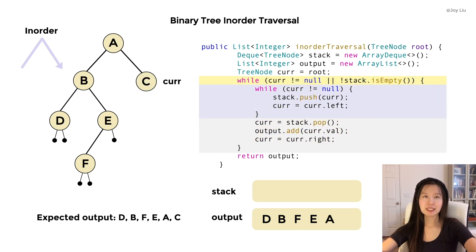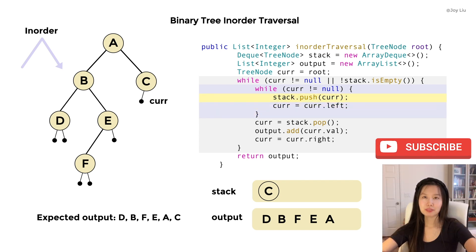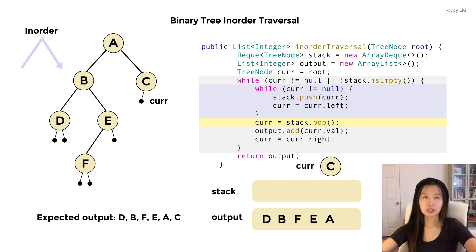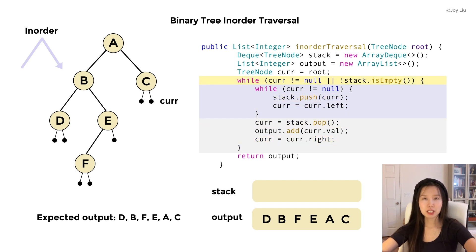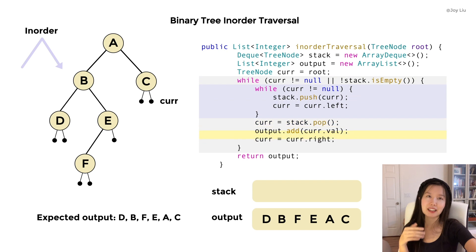Now we move the pointer to A's right child C. This time the stack is empty, but the current node is not null, so we're still good. Push the current node C to the stack. What is the left child of C? It's null, so we jump out of the inner loop. We pop the last element from the stack and call it current — so the current node moves back to C, the leaf. We add the value of C to the output. The current node is then set to null and we go back to check the condition.